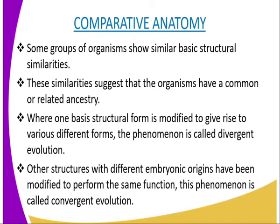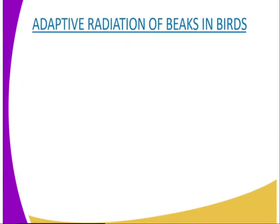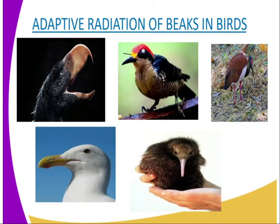Divergent evolution is where, ranging from the same basic structure, organisms have been modified to perform different functions. These divergent forms originating from a single ancestral form may each become adapted to a different ecological niche in the given habitat.